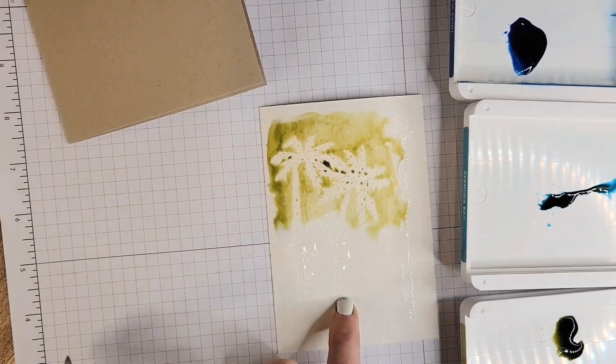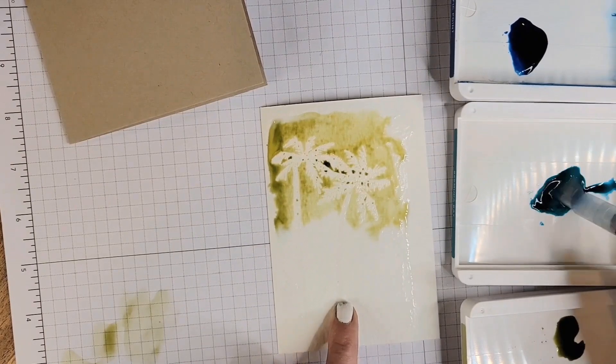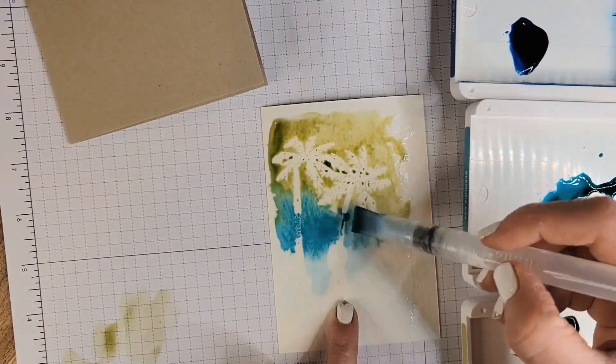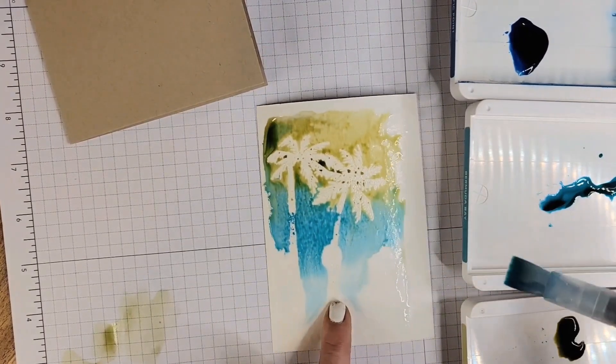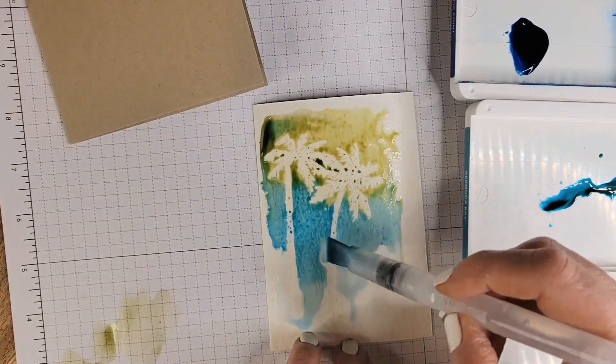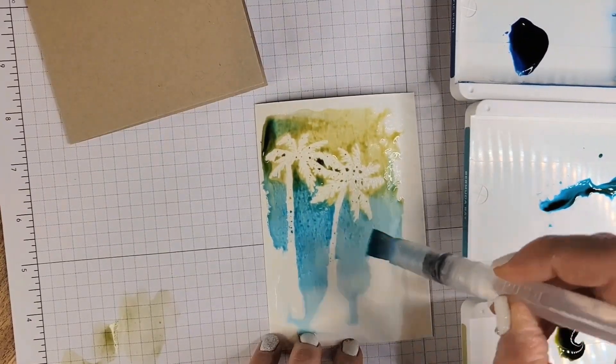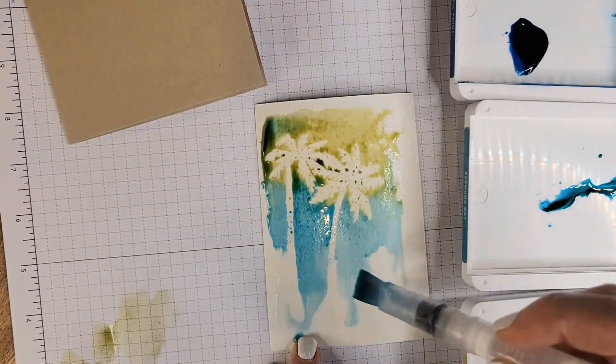Then let's see, Bermuda Bay, and the colors are going to blend like crazy. That's all right, because we're using a lot of water, so don't worry about that.